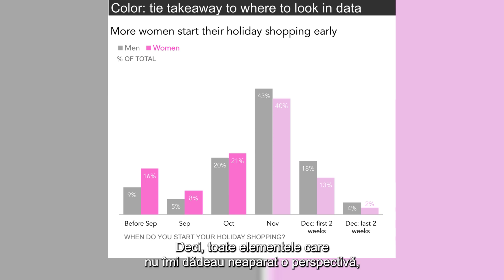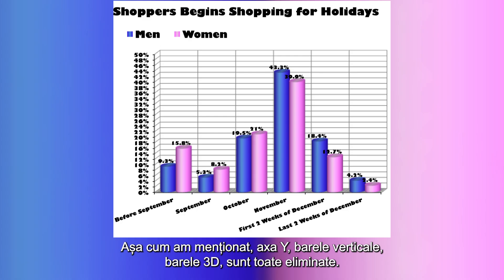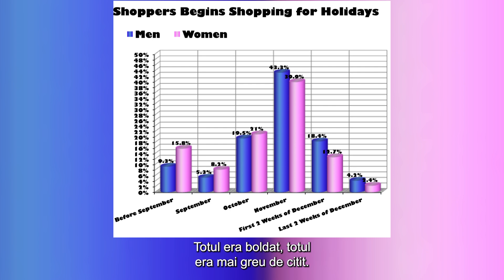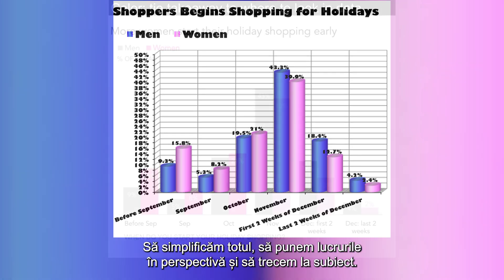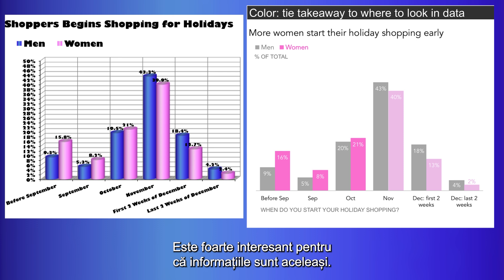So all the elements that didn't give insight — the y-axis, the 3D columns, everything bolded, and the angled x-axis labels — all of that gets removed. The font is changed to something simpler. Everything is simplified, put into perspective, and gets straight to the point: what is the actual analysis? Women plan better for the holiday — that's the main idea from this chart.